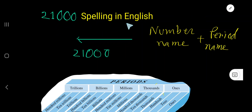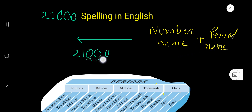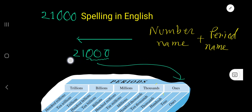21,000 — spelling in English. To spell this number, we follow this rule: number name plus period name. Three digits make a group, which is called a period. The name of the first period is the ones period. The next period is the thousands period.